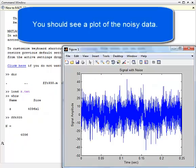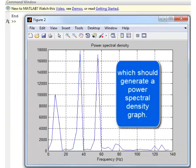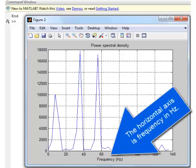You should see a plot of the noisy data, and then press the ENTER key, which should generate a power spectral density graph. The horizontal axis is frequency in Hertz.